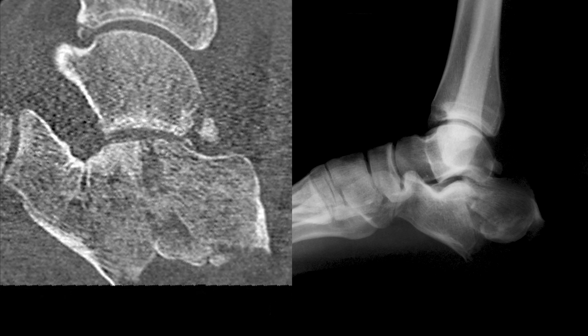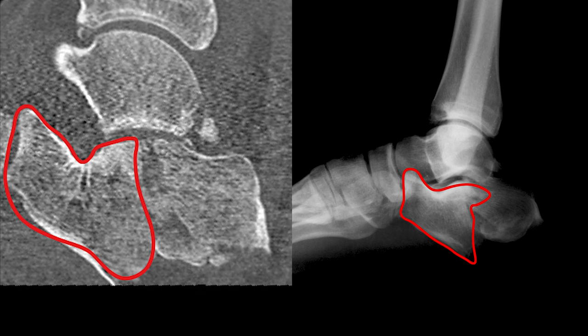To understand the reduction strategy, let's look at the lateral view of the foot and the sagittal CT scans. Three major fragments are indicated with different colors. The red fragment is the so-called constant fragment, which stays in anatomical position. In this case, it includes the anterior process, sustentaculum tali, and almost half of the posterior facet.